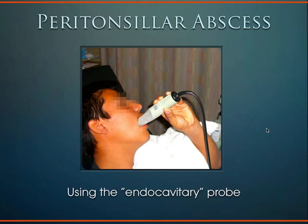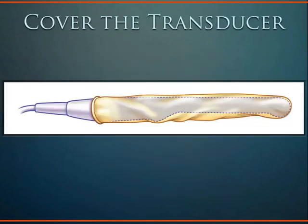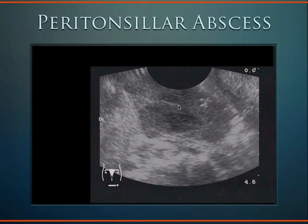It's good to cover the probe with a sheath because of the other locations the transducer can be used, keeping it as clean as possible. Put gel between the probe and the sheath — you can put a little gel in the sheath, then insert the transducer. You can spray the back of the patient's throat with an analgesic spray like benzocaine or hurricane spray, and a little Versed to calm the patient's nerves. This is what a peritonsillar abscess looks like — the endocavitary probe's footprint is back here and the needle was guided directly into the abscess.